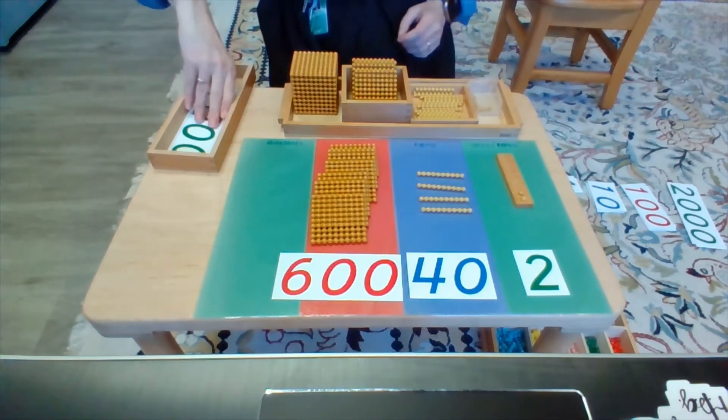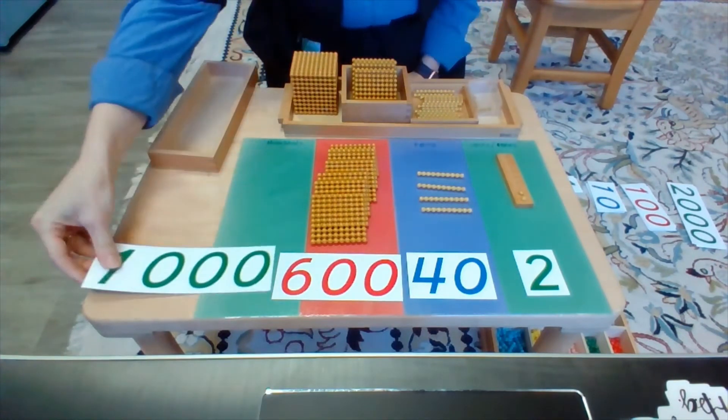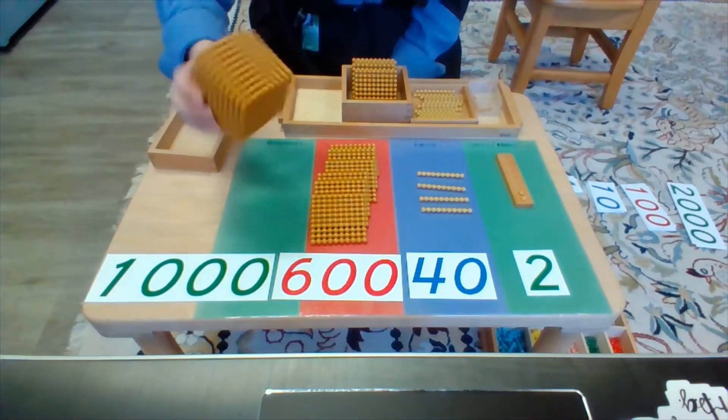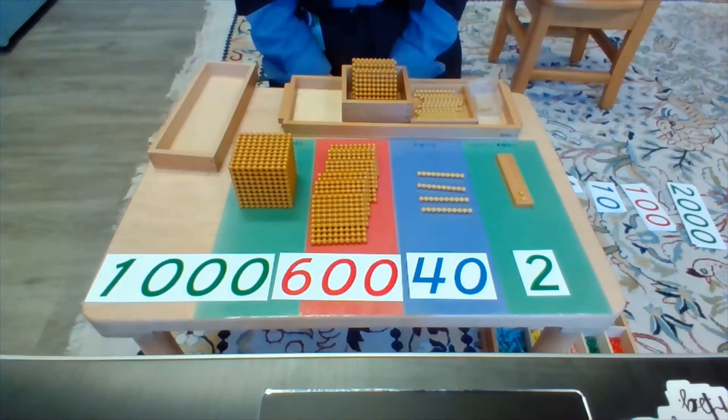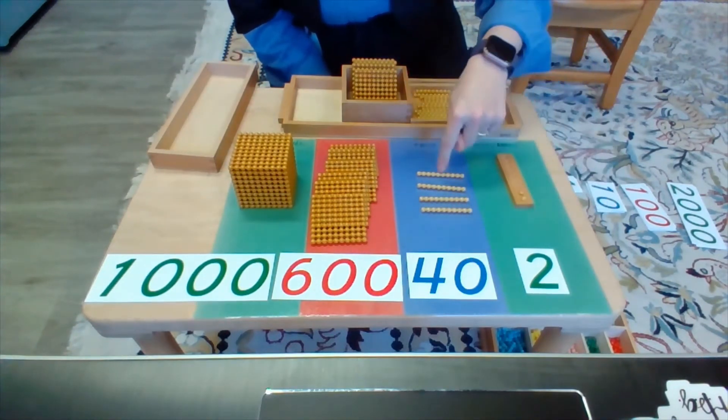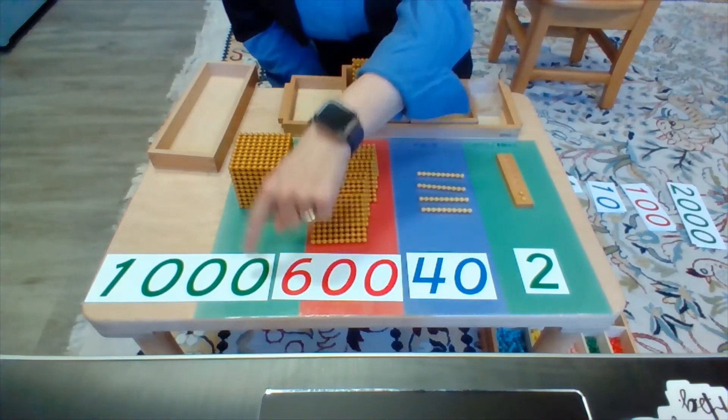Now when I come to the last of this number, I have the thousands and that is because I am counting in the 1,000 cubes. So I have 2, 40, 600, 1,000.